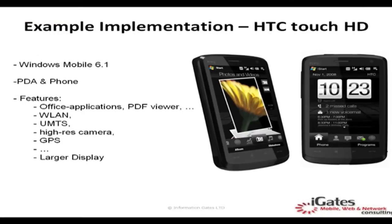Today we are getting devices in the market that come with Windows Mobile 6.1 to 6.5 edition. The main features include office applications, PDF viewers, wireless LAN, Bluetooth, UMTS, high resolution cameras, GPS, and large touch displays.